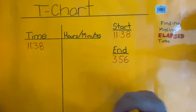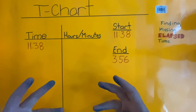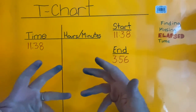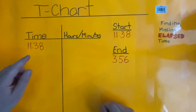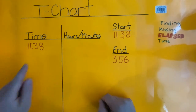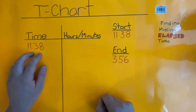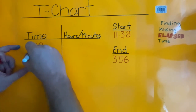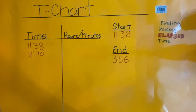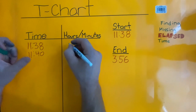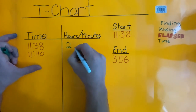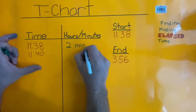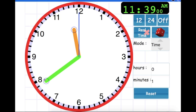When it comes to a strategy like a t-chart, we want to work with as friendly numbers as possible — either groups of 10 or quarter hours, which are 15 minutes. So what we'll want to do is get this up to a more friendly number, which is 11:40. We're going to go from 11:38 to 11:40. How many minutes happened between 11:38 and 11:40? That gives us 2 minutes.